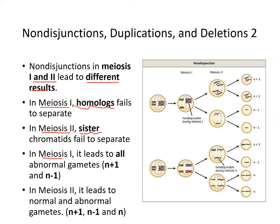In meiosis I non-disjunction, all gametes are abnormal — some gain a chromosome (N+1), others lose one (N-1). In meiosis II non-disjunction, two gametes are normal while one gains a chromosome and one loses a chromosome.